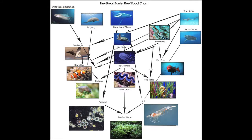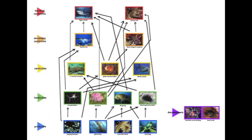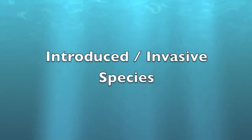The main apex predators in the Great Barrier Reef food web are the tiger shark, the great white shark, moray eel, the humpback whale and the dugong. Without any one of the 4,000 species existing in the Great Barrier Reef, the whole food chain could be drastically affected. With the loss of tiger sharks, their prey would rise in numbers immensely, and therefore their prey's prey would start to die out and create an imbalance in the whole ecosystem.